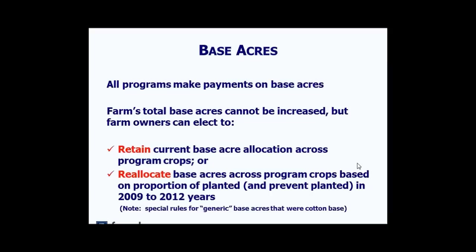Let's look at the base acre decision. The Price Loss Coverage Program and both versions of the Agriculture Risk Coverage Program pay on base acres. The farm's total base acres cannot be increased by this reallocation decision, but farm owners can elect to either retain the current base acre allocation or reallocate base acres across program crops using the proportion of planted and prevent-planted acres in the 2009–2012 crop years. Note there are special rules for generic base acres that were once upland cotton base.